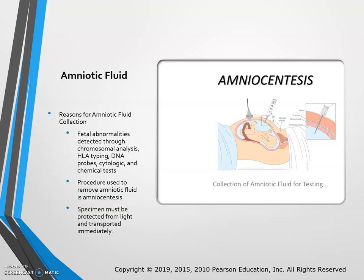Amniotic fluid is collected to detect fetal abnormalities through chromosomal analysis and chemical testing. The procedure used to remove amniotic fluid is called amniocentesis, and it can also detect various stages of cystic fibrosis or other genetic concerns. The specimen must be protected from light and transported immediately. That concludes Chapter 16, Part 1.